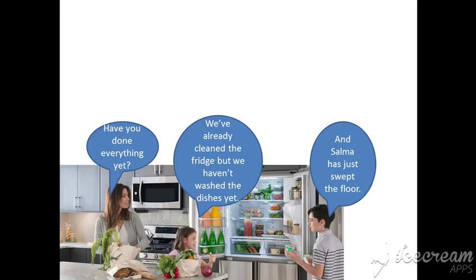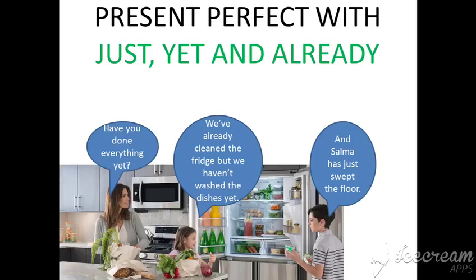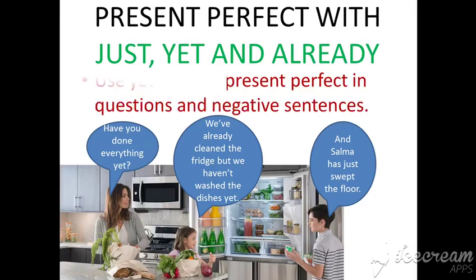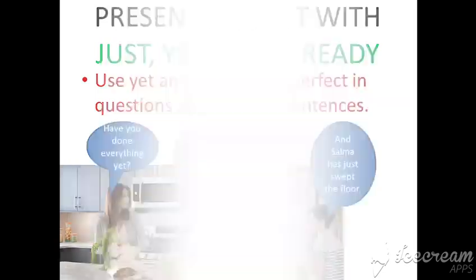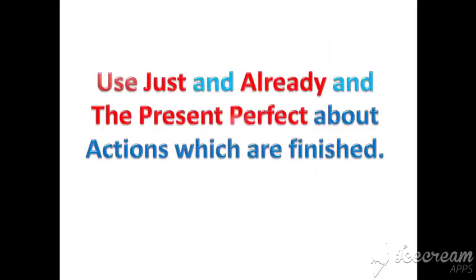So, 'just,' 'yet,' and 'already' are keywords for the present perfect. 'Yet' is used only with questions and negative sentences. We use 'just' and 'already' when we talk about the present perfect, or about an action which finished in the past.